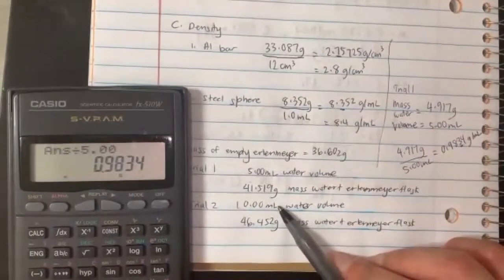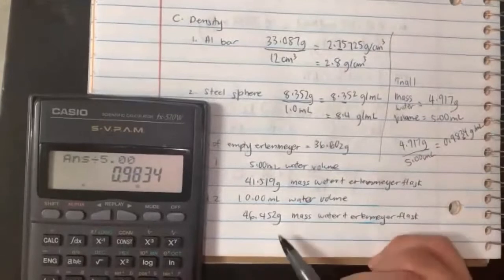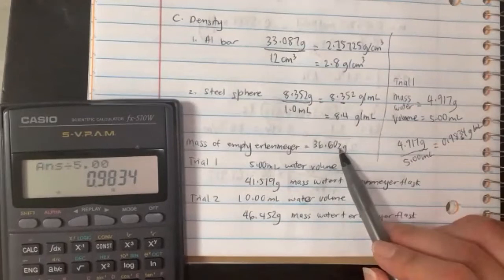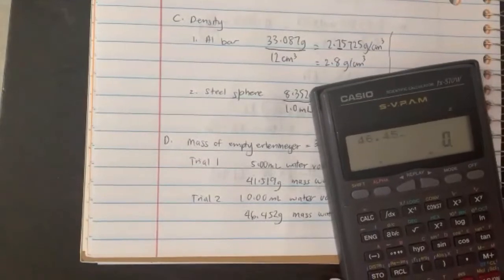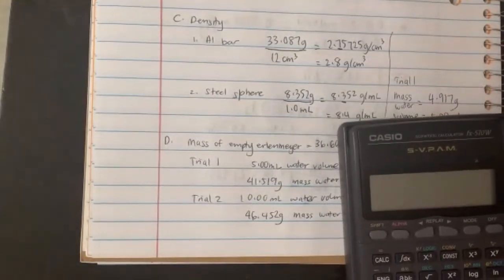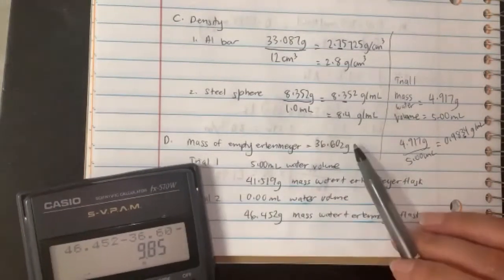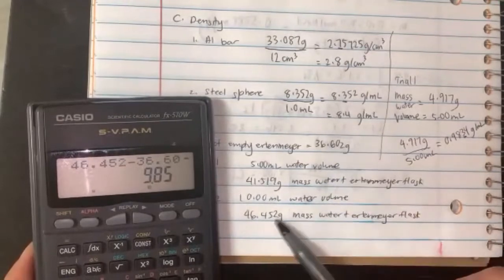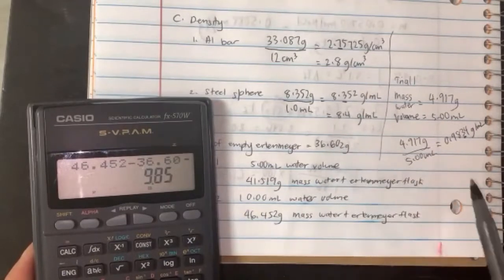The volume is 10 milliliters here. For trial two, we take 46.452 minus the empty flask, which is 36.602. Doing that calculation: 46.452 minus 36.602 gives 9.85. Even though the calculator shows 9.85, you need to keep three decimal places because both numbers are three decimal places. So my mass of water for trial two is 9.850 grams.